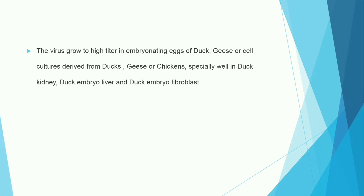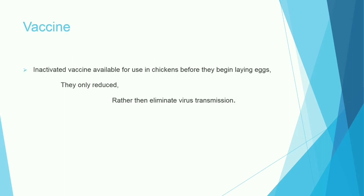The virus grows to higher titers in embryonating eggs of duck or geese, or in cell cultures derived from duck or geese or chickens — especially well in duck kidney, duck embryo liver, and duck embryo fibroblast. An inactivated vaccine is available for use in chickens before they begin laying eggs, which reduces rather than eliminates virus transmission.